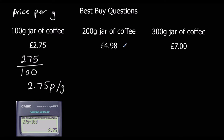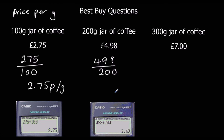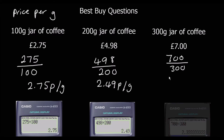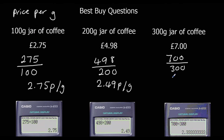For the 200 gram jar, the price is 498p divided by 200 grams, giving 2.49p per gram. And for the 300 gram jar, the price is 700p divided by 300 grams, which gives 2.33 pence per gram. So which is the best value for money?